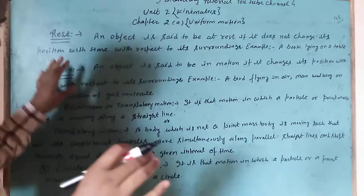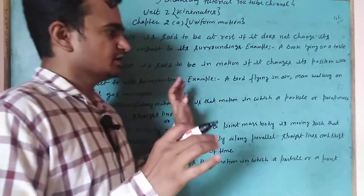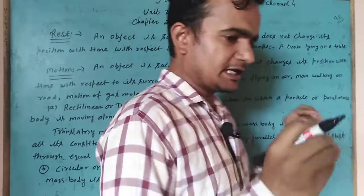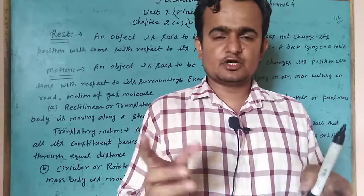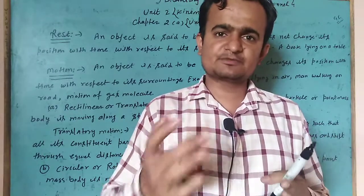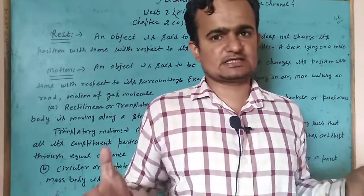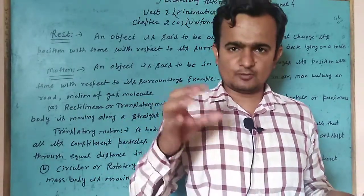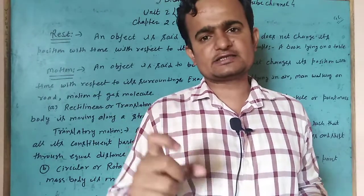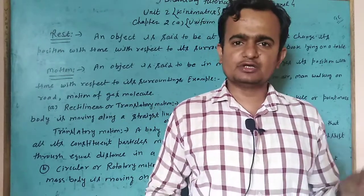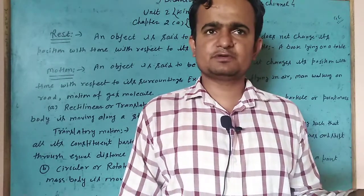...not change its position with time, with respect to surroundings. कोई भी object rest में है तो उसकी position change नहीं होती है time के साथ और उसके आसपास के surrounding के साथ। उसे rest कहते हैं — जहाँ पर किसी भी object की position time के साथ change न हो। Example: a book lying on a table, a stone placed on the surface of the earth.